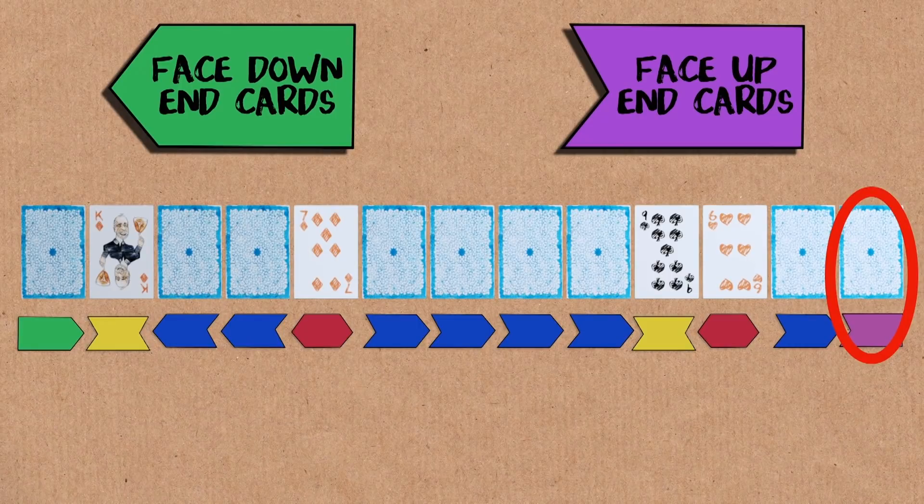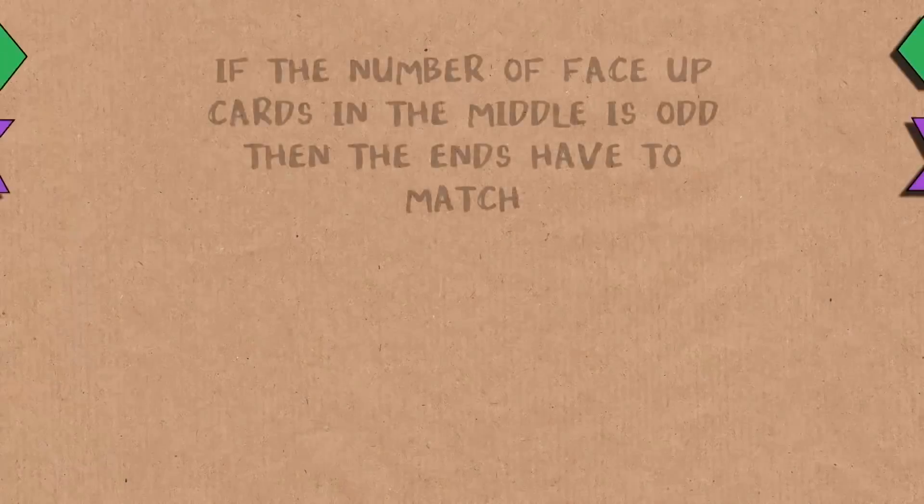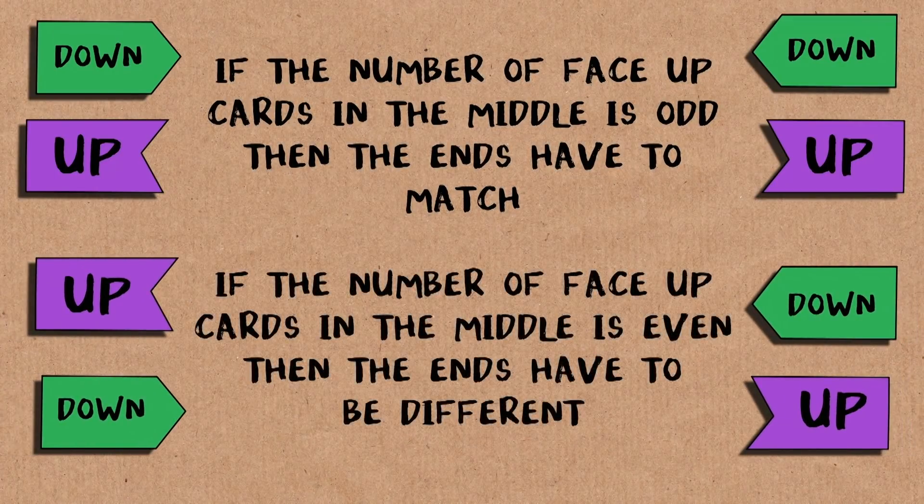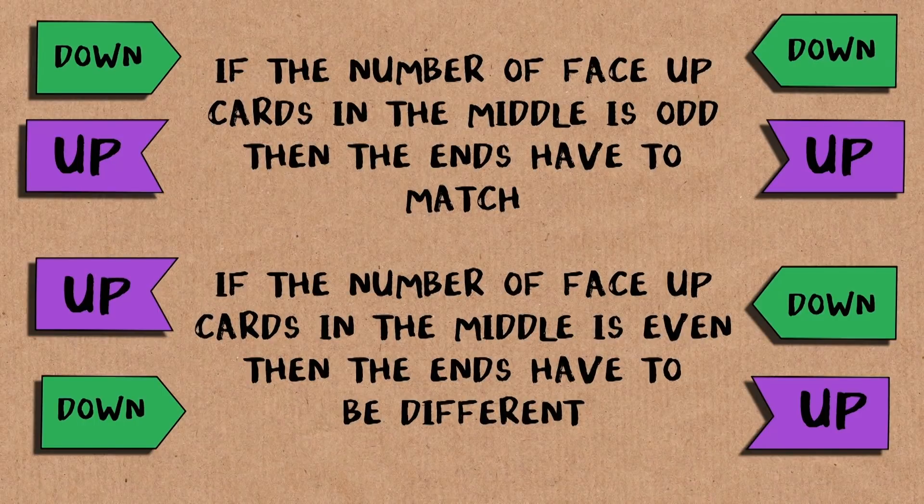So ultimately, if this one winds up face up, end has to be down. This one down, ends up. And that's based on the number in the middle. If the number in the middle is odd, then the ends have to match. If the number in the middle is even, then the ends have to be different.